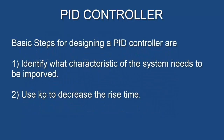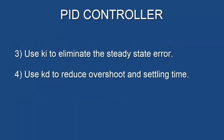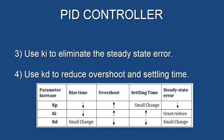The basic steps for designing a PID controller are: first, identify what characteristic of the system needs to improve; second, use KP to decrease the rise time; KI to eliminate the steady-state error; and KD to reduce overshoot and settling time — as we have done many times in previous classes by different methods.